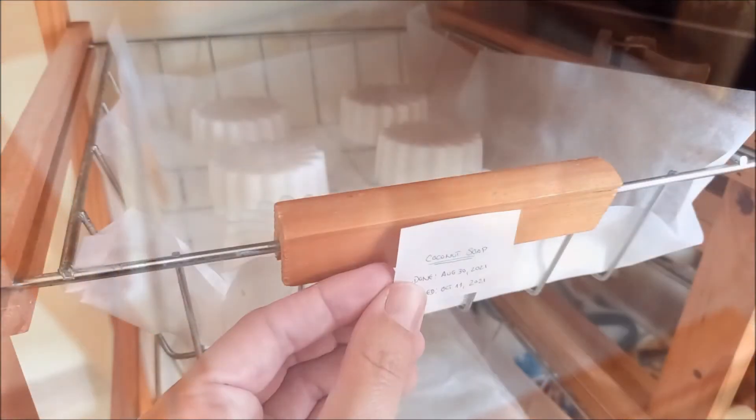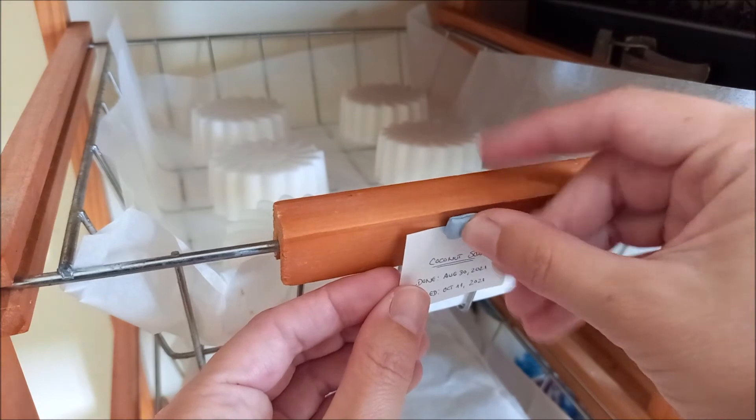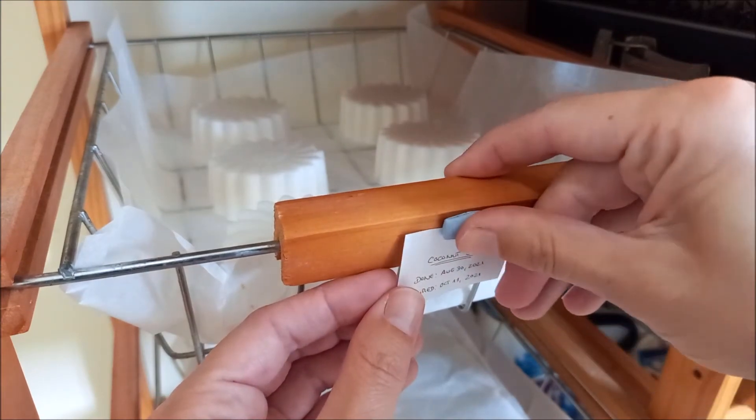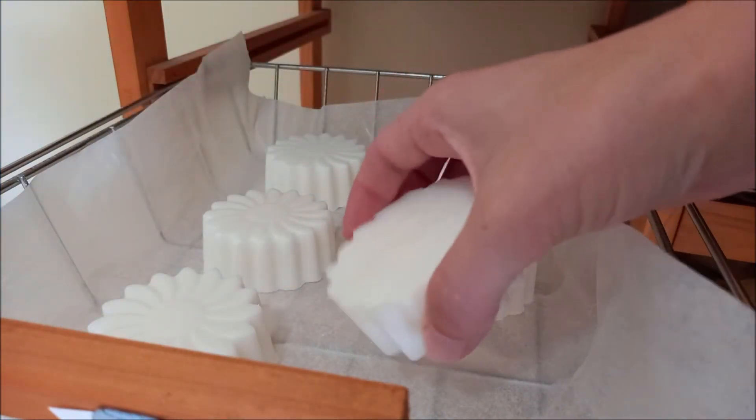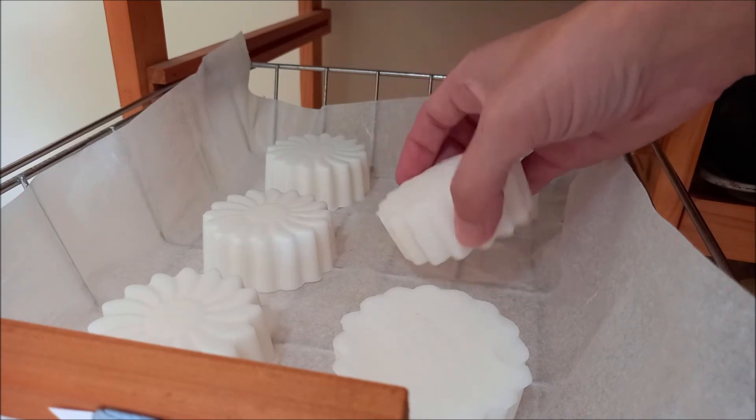For better guidance, it is very important to make a label with the date the soap was made and the approximate date of the end of the cure. During the 6 weeks of curing of coconut soap, you should rotate the bars so that they can cure evenly.